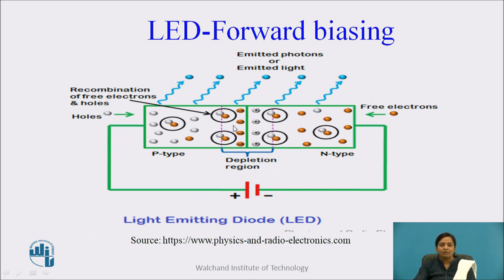LED operates in a forward biasing mode. In forward biasing mode, the positive terminal of the external supply is connected to the P-type semiconductor, and the negative terminal of the external DC source is connected to the N-type semiconductor. Whenever the battery is connected in this way, the majority charge carrier electrons from the N-type will repel towards the junction. Some of these electrons will recombine with the holes present in the depletion region at the positive ions, and some electrons will cross the junction and combine with holes present in the P-side.